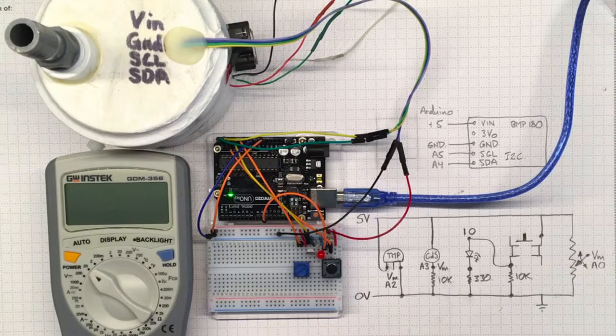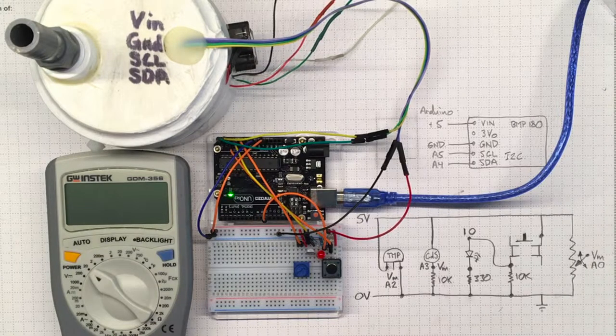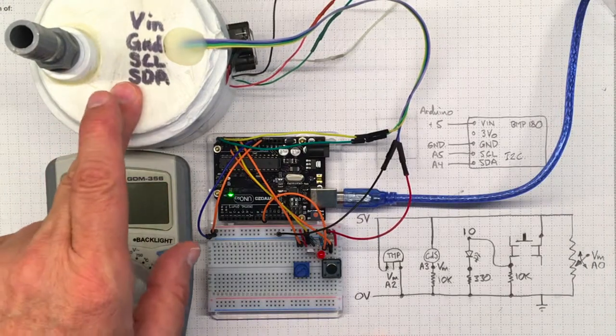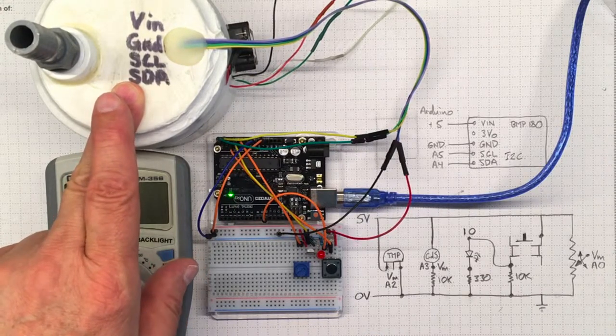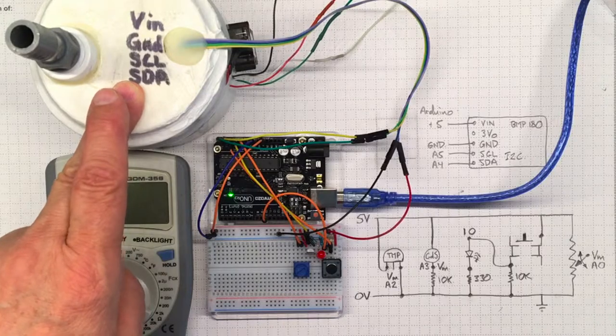So now I've got all of this hooked up. I should be able to measure all of these analog quantities. And at the same time, I should be able to communicate digitally with this pressure sensor and measure the atmospheric pressure. So let's test that out and let's go to the next episode.